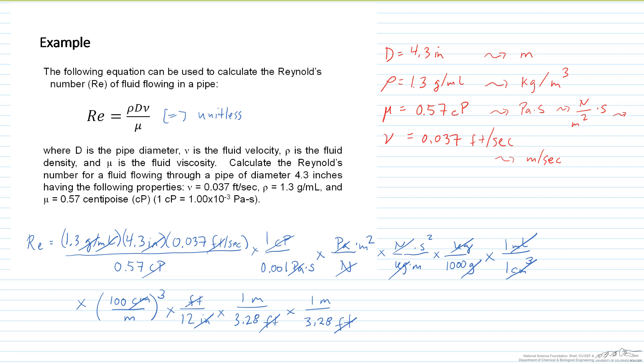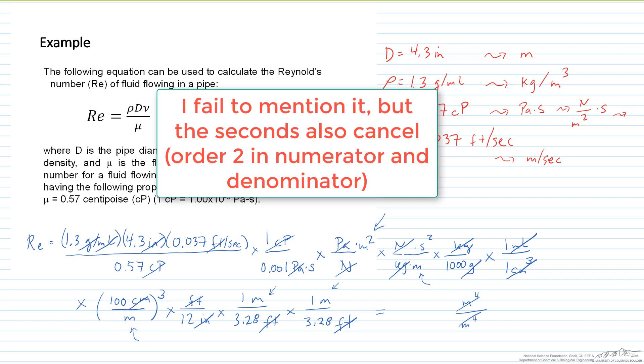And what we end up with is when we do the units, we end up with in the numerator, so we are just looking at what is still left, we have meters squared here. We also have a meters here and a meters here, so that's meter to the fourth. And on the denominator we have meters here, and we have meter cubed, so that's meter to the fourth. So you see those cancel. So our Reynolds number is going to be unitless.